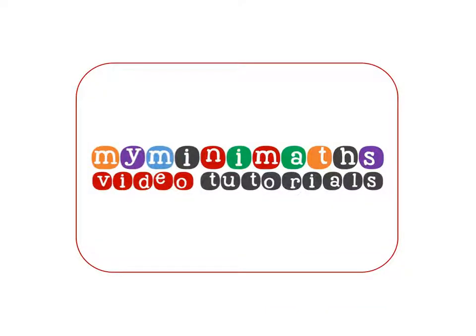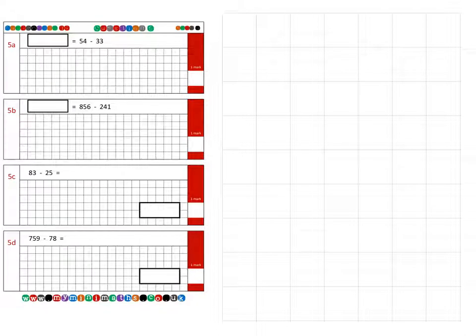Hello and welcome to the myminimaths.co.uk video tutorials. Today we're looking at arithmetic 16 practice question 5, which is subtracting two-digit and three-digit numbers.